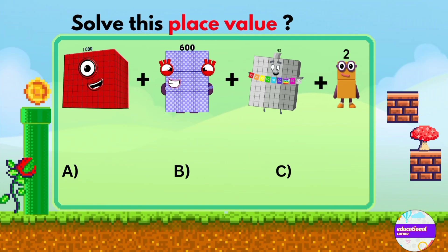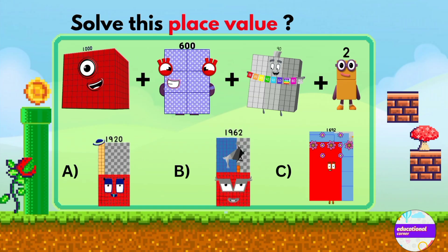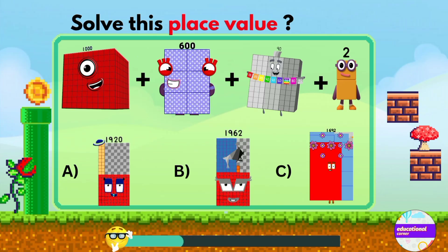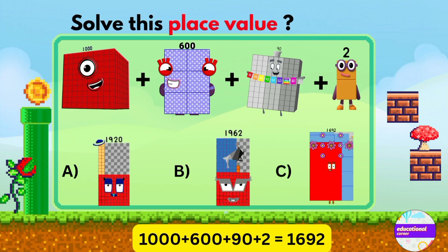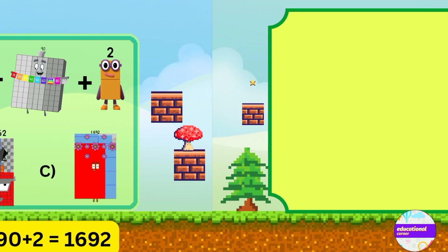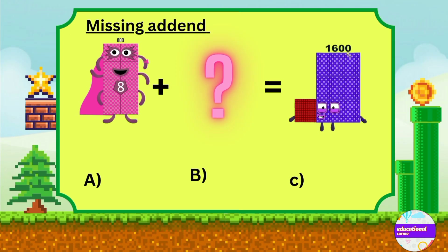Let's see the next quiz. Solve this place value: one thousand plus six hundred plus ninety plus two. What's the answer? Time is up! Yes, you are right — it is one thousand six hundred and ninety-two.